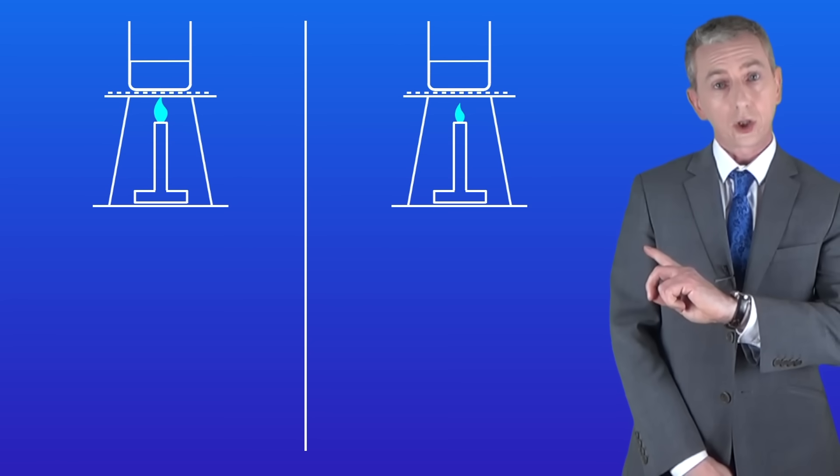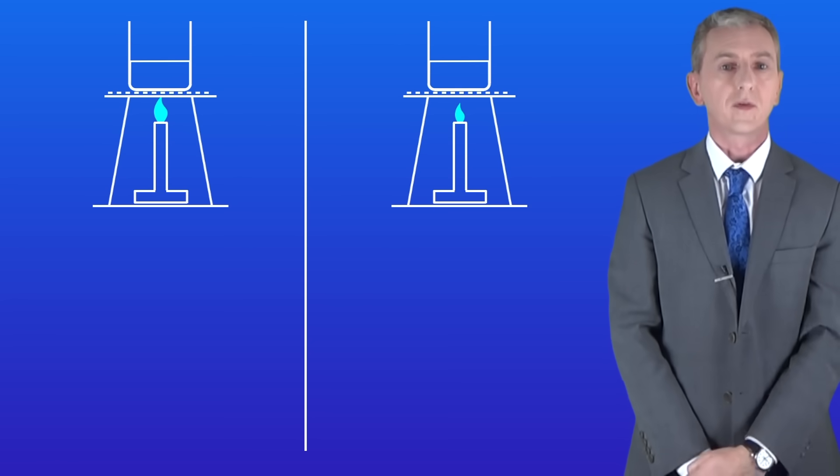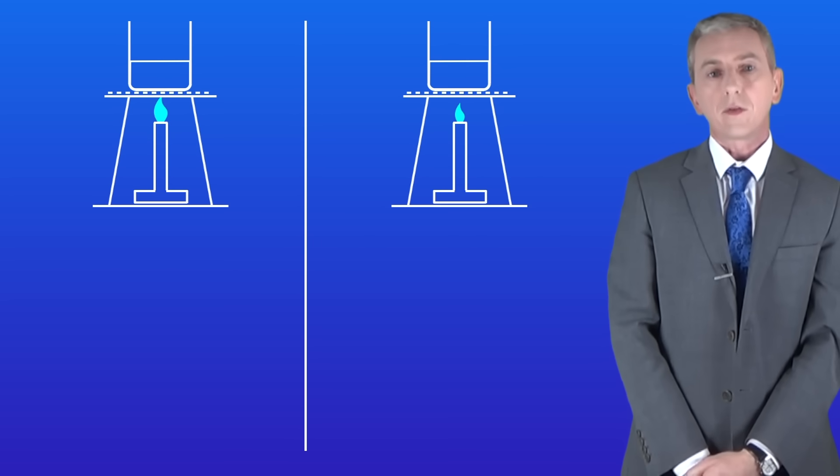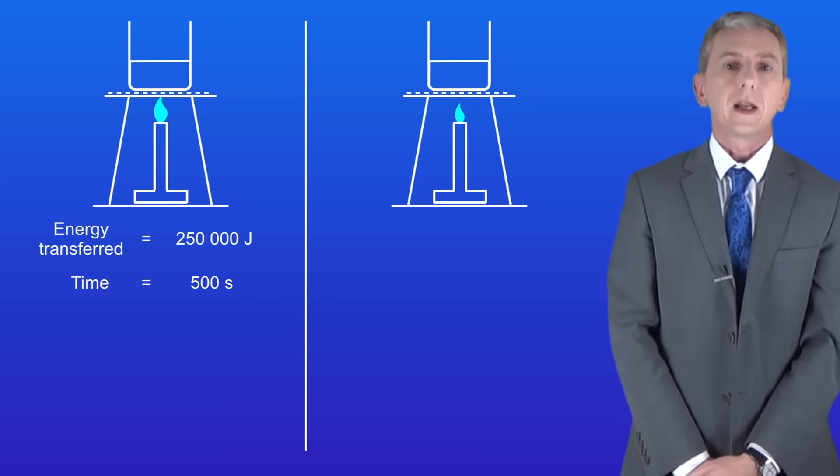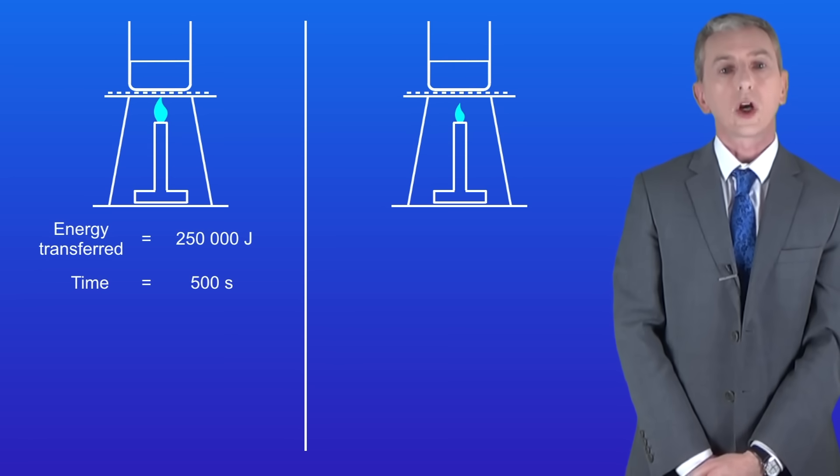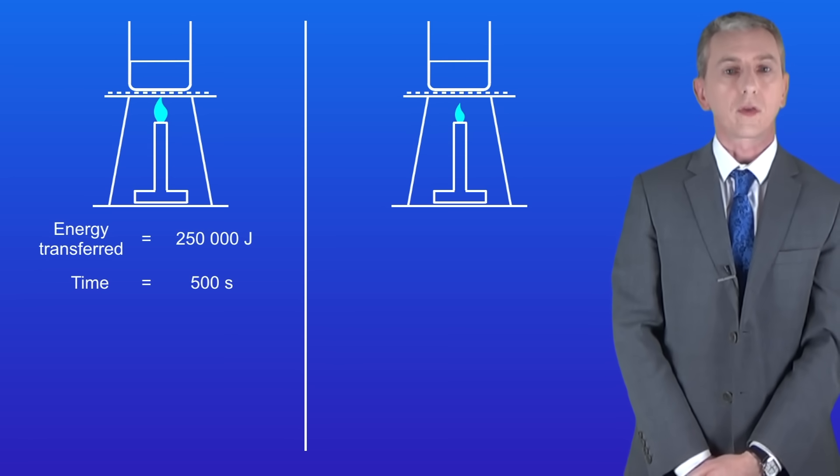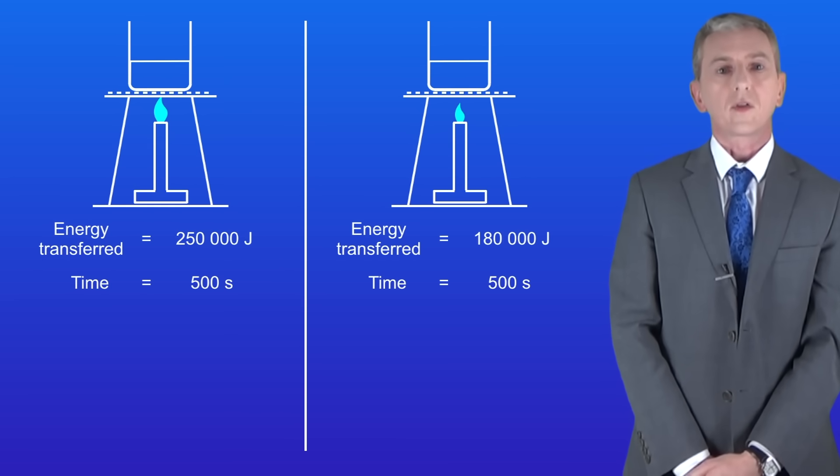I'm showing you here two beakers containing the same volume of water. Both of these are being heated by Bunsen burners and we're going to calculate the power of these energy transfers. The left hand Bunsen burner is transferring a total of 250,000 joules of thermal energy in 500 seconds and the right hand Bunsen burner is transferring a total of 180,000 joules of thermal energy in 500 seconds.